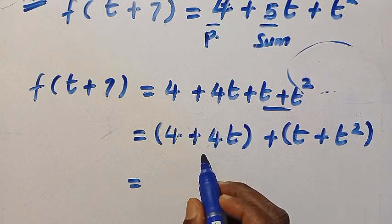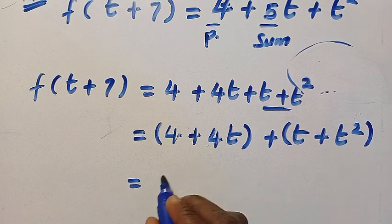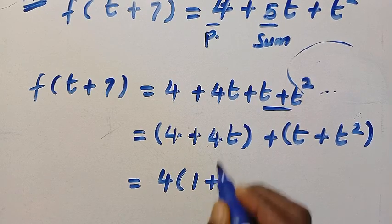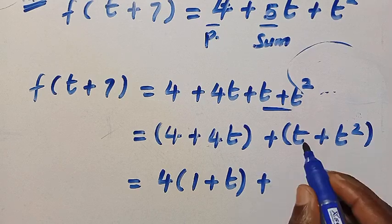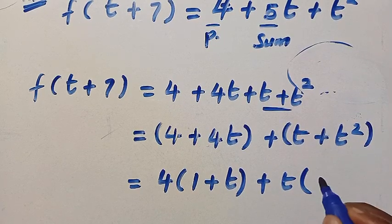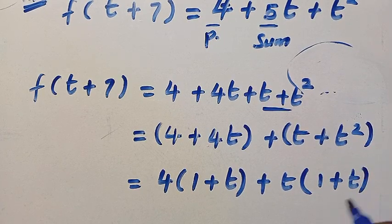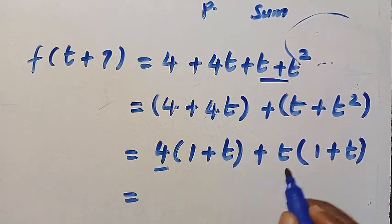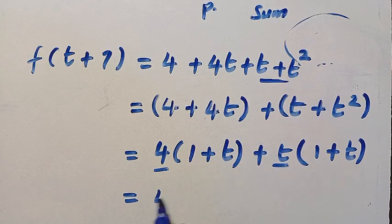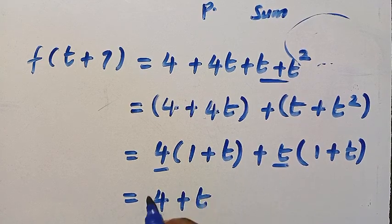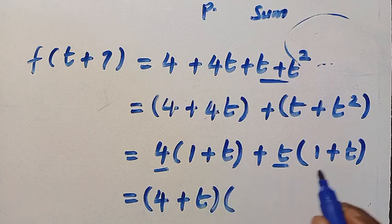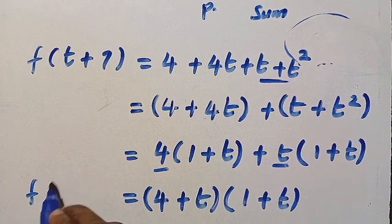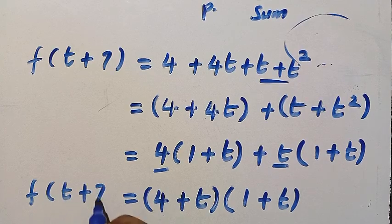After grouping, what is common is 4. By factoring out 4, we have 4 brackets 1 plus t. Then let's take out t from here. Taking out t, we are left with 1 plus t. Then 1 plus t repeats in the brackets. Then we have 4 plus t in bracket, and 1 plus t.